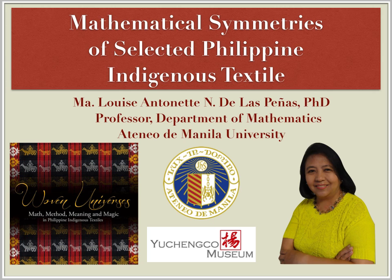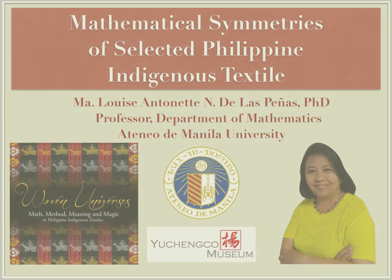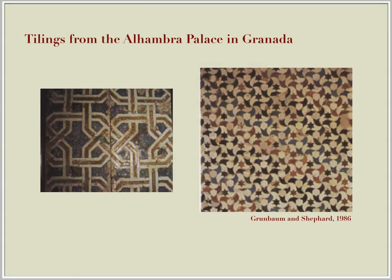Symmetry analysis of designs of various cultures has been addressed by mathematicians since the early part of the 20th century. One example are the designs in the tilings that adorn the Alhambra Palace in Granada, Spain. This artwork, representative of Moorish culture, has been analyzed extensively by several mathematicians, such as Grünbaum and Shephard, for their high degree of planar symmetry.